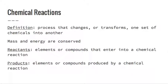In a chemical reaction, we have reactants, which are elements or compounds that come into a reaction, and then products, which are produced by the chemical reaction.